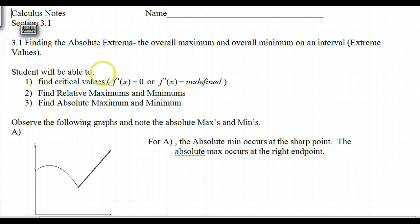What we want to be able to do also in this section is find something we call critical values. Critical values are found when f prime of x is equal to 0 or f prime of x is undefined. From that, we can find relative mins and maxes, and then we can compare them and see which ones overall would be the absolute maxes and minimums based on these relatives and also the endpoints.